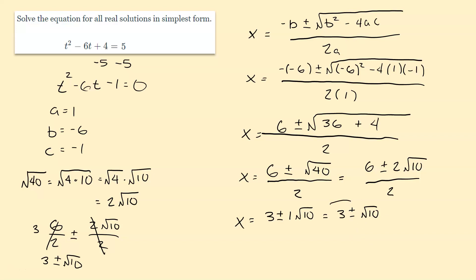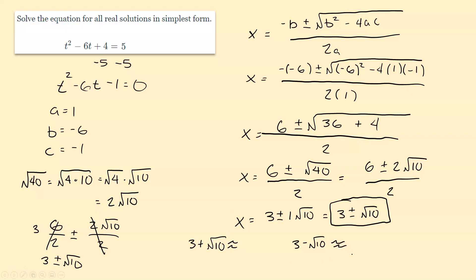Final answer is 3 plus or minus root 10. We can also give decimal approximations: 3 plus root 10 is approximately 6.16, and 3 minus root 10 is approximately negative 0.16, rounding to the nearest hundredths place. If you have the TI-30 calculator and it's giving you the same expression back instead of a decimal, press the button underneath the plus sign with the two arrows going left and right — that converts it to a decimal.